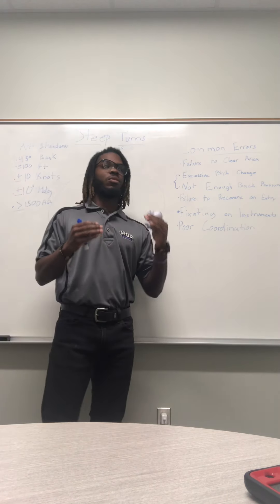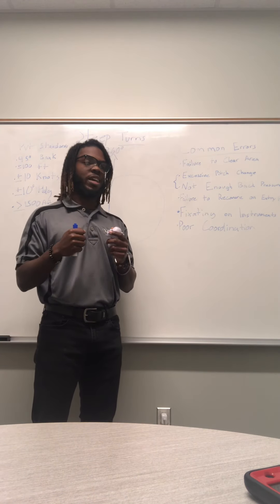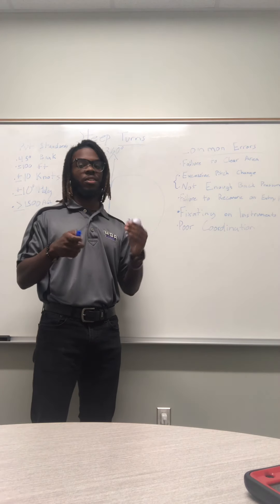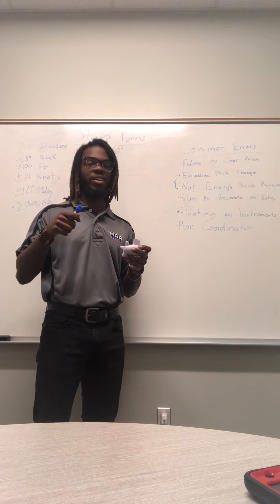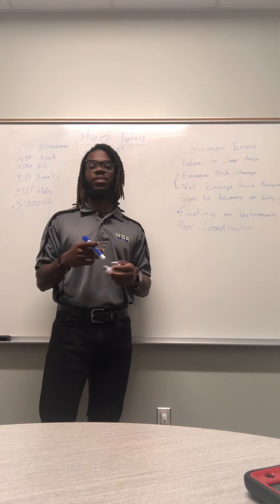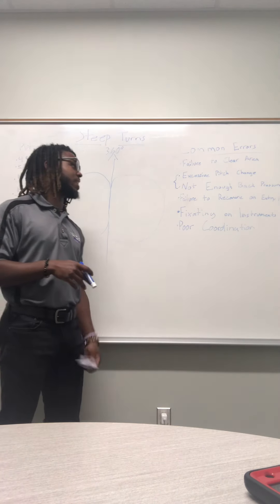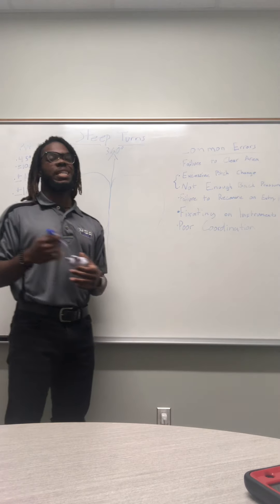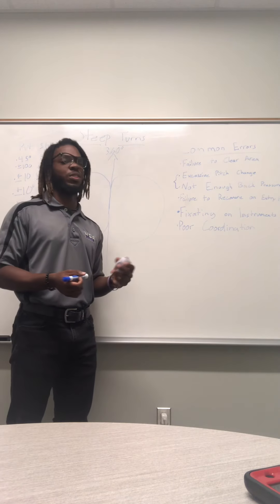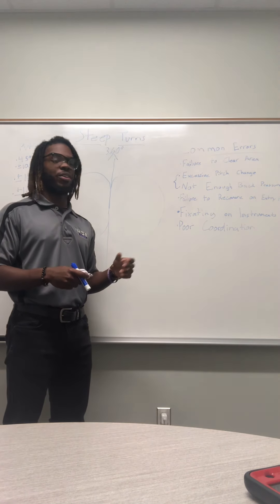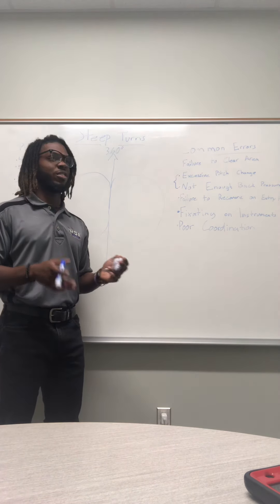If the horizon starts to rise and the nose starts to sink, add more back pressure. If the horizon starts to sink and the nose starts to rise, push forward a little bit to counteract that and maintain entry altitude within plus or minus 100 feet. The last common error is poor coordination. In the left turn you won't need as much right rudder, but in the right turn you will need more right rudder because the airplane wants to yaw left, and you need to counteract that within your steep turn.